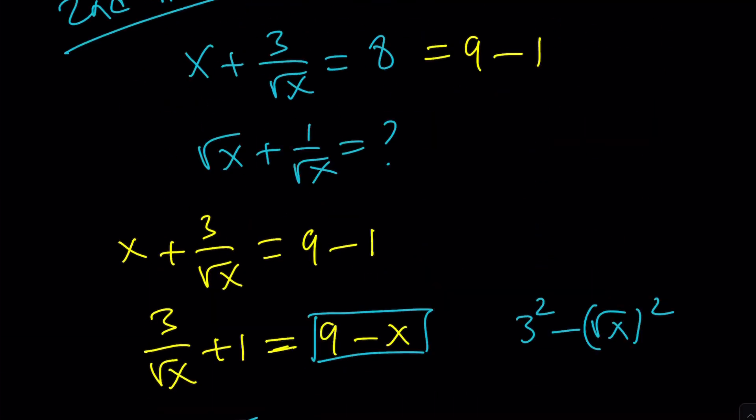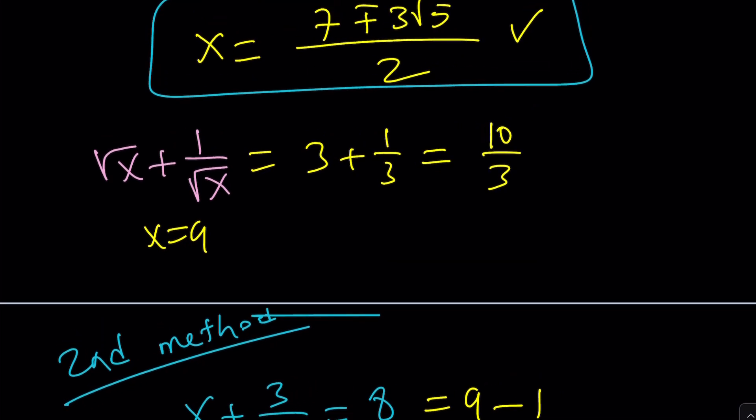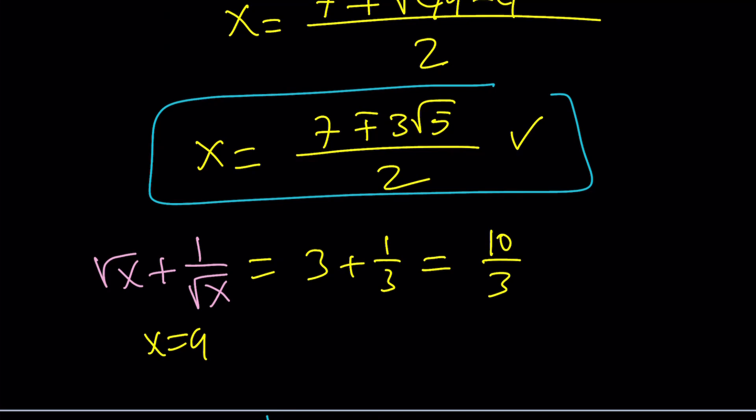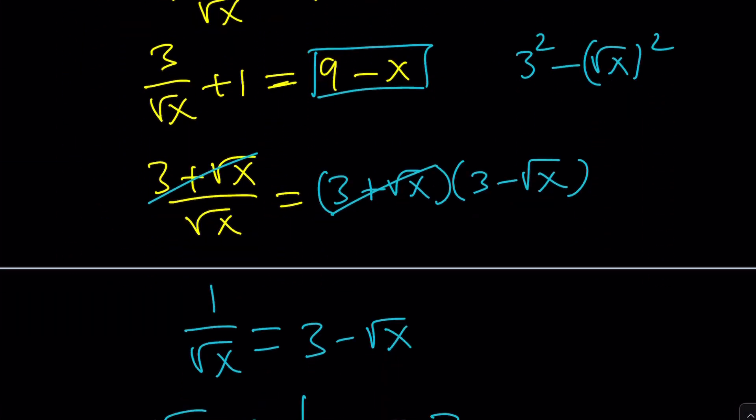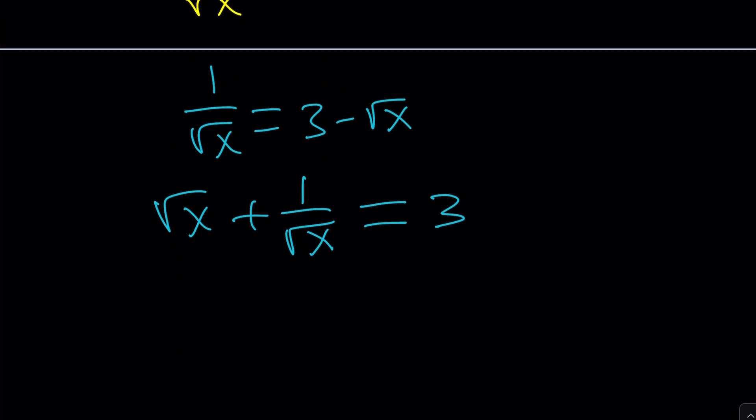Okay, great. Now let's go back to what we found. We did get 10 thirds from here because x was equal to 9, and that gave us 3 plus 1 third. Why are they not equal? There's something to think about. We probably made a mistake. And if there's a mistake, what is that?